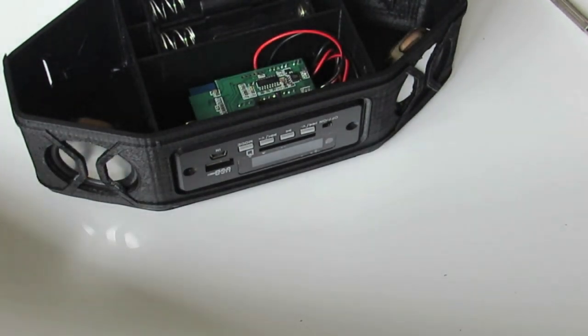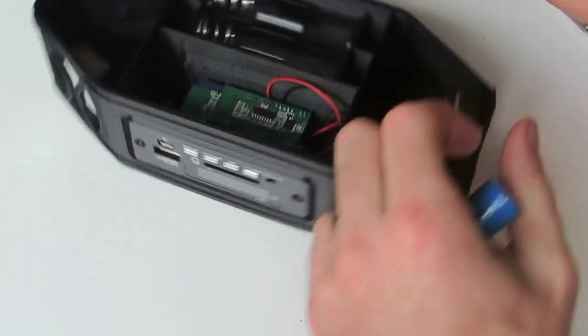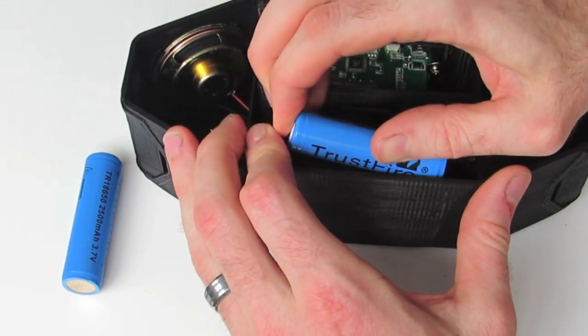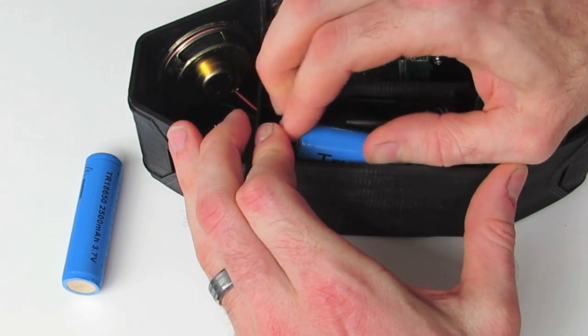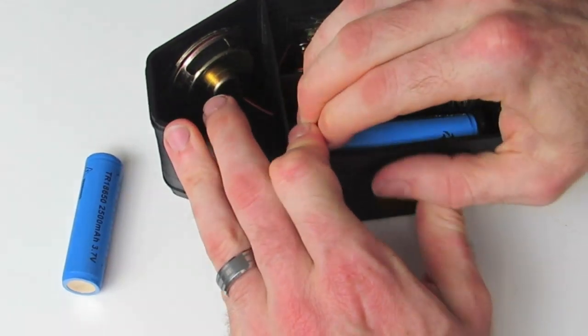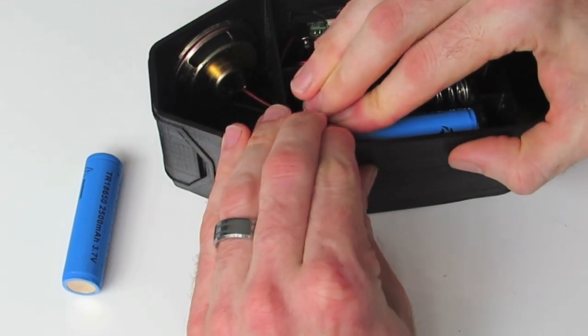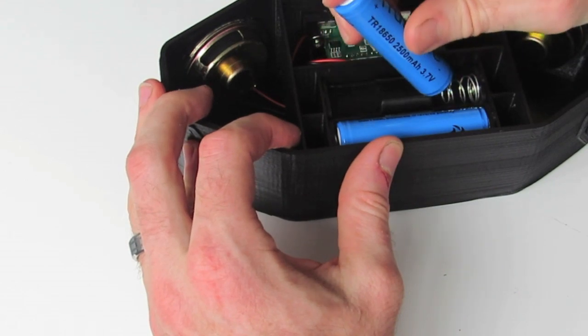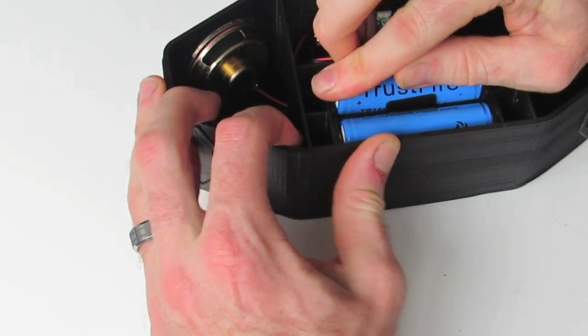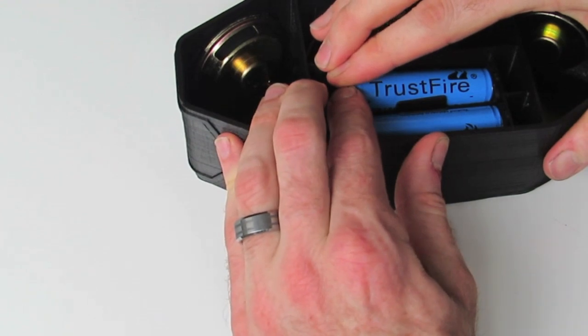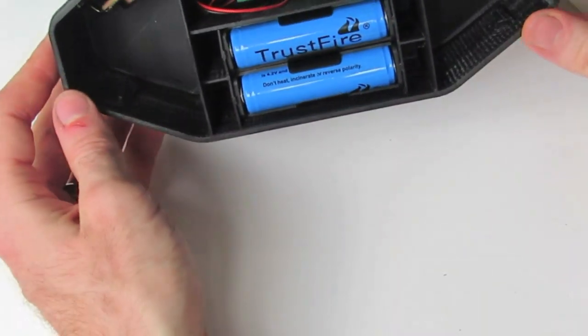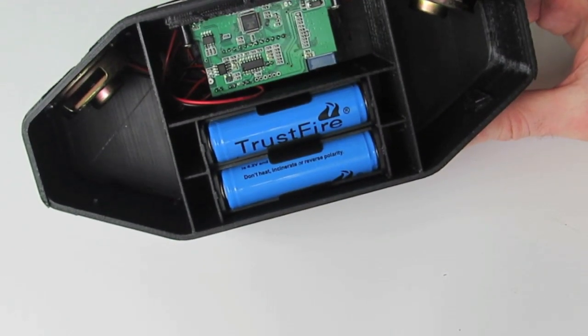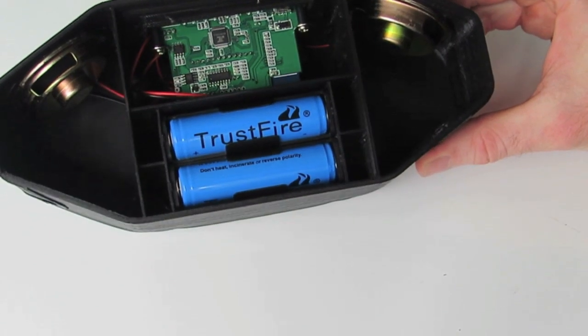Next we want to install our two batteries, making sure you get the polarity correct. Like I mentioned, these are quite a snug fit. And the other one. Like so. We've got our speakers, battery holders and batteries, and our head unit, all inside our printed case.